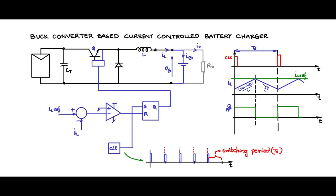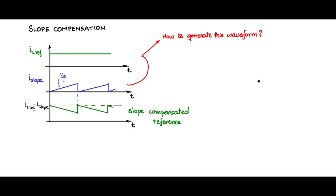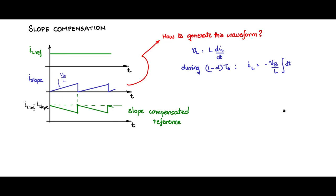By Faraday's equation, the voltage across the inductor is given by vL = L · (d·iL/dt). During the (1 - d)·Ts period, iL decreases as -vb/L · integral(dt). For i_slope, considering only the magnitude of the slope, i_slope = vb/L · integral(dt).